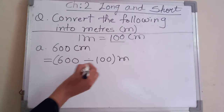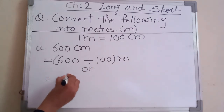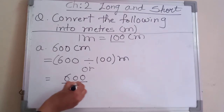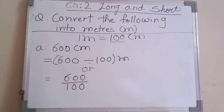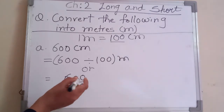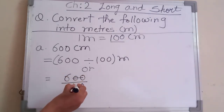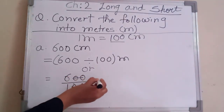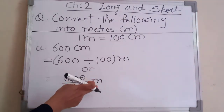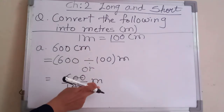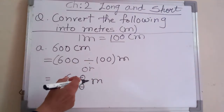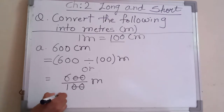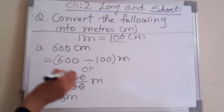You can also write it as a fraction: six hundred in the numerator and hundred in the denominator. You can cancel the two zeros in the numerator and the two zeros in the denominator. When you divide by hundred, the unit changes from centimeter to meter. After cancelling, the answer is six meter.